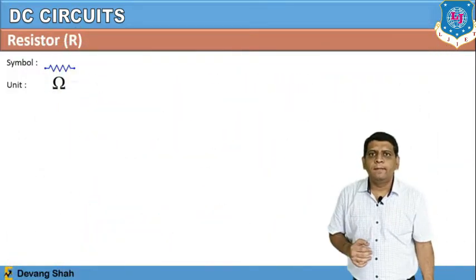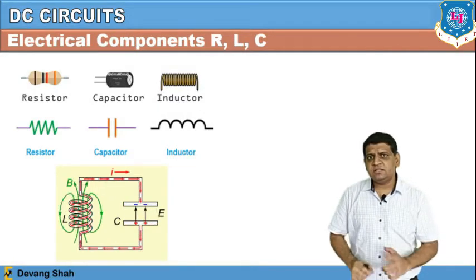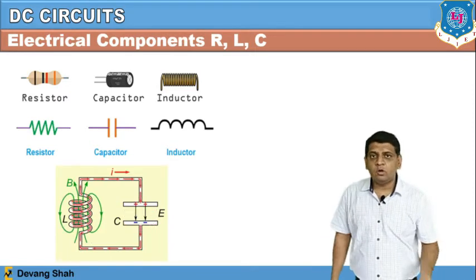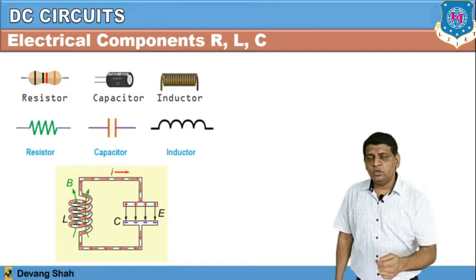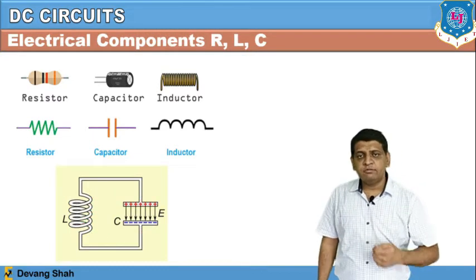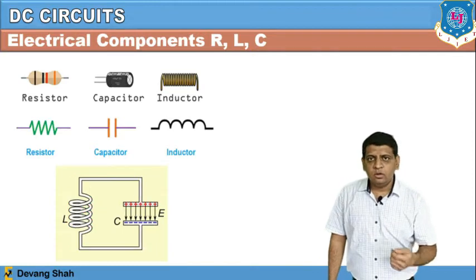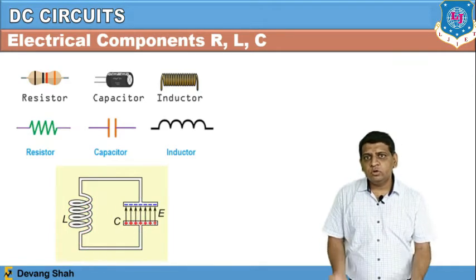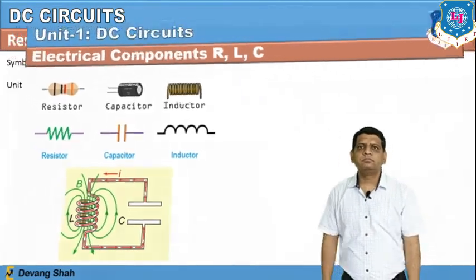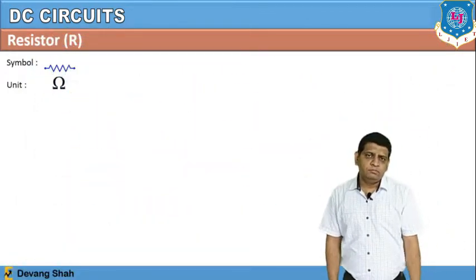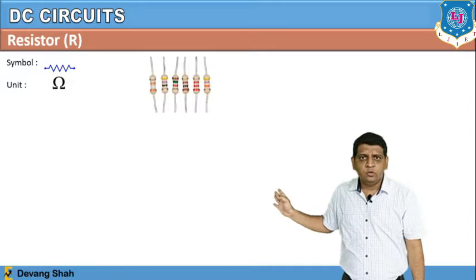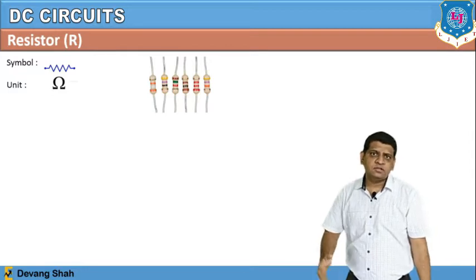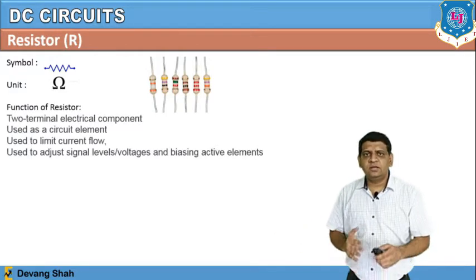Resistance is a passive element — once you apply a voltage it will simply drop the voltage. This is not the case with inductor and capacitor; once you apply voltage to inductor or capacitor, they have a phenomenon to charge and discharge. Capacitor and inductor work with respect to time and give a response with respect to time. Resistance has the unit Ohm and in the market it looks like this, and you can use it as a circuit element.